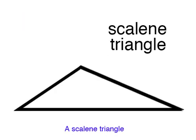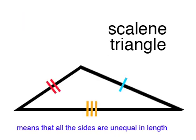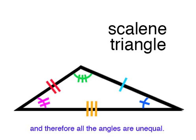A scalene triangle means that all the sides are unequal in length, and therefore all the angles are unequal.